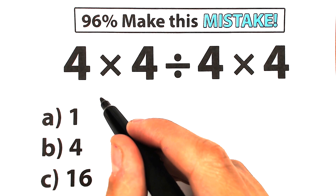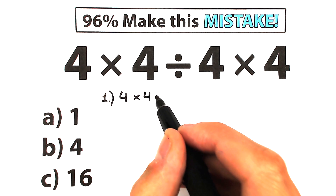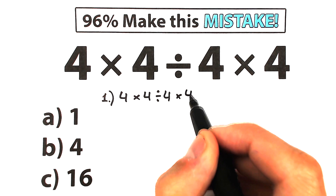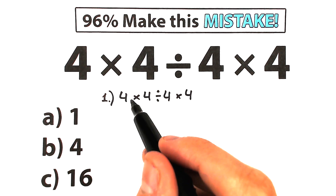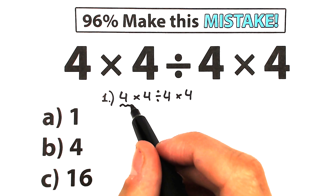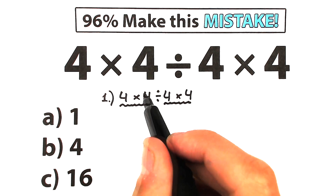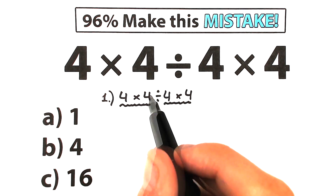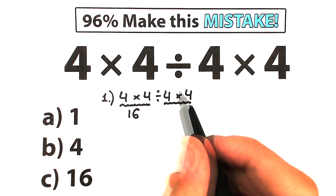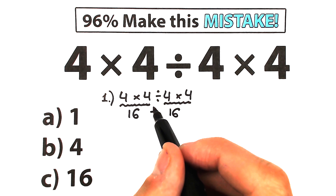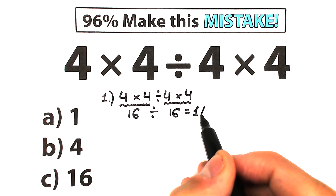I want to start with the first interpretation. We have 4 times 4 divided by 4, and times 4. If you look closely, we have multiplication on the left-hand side and absolutely the same multiplication on the right-hand side — on the left and right side of the division sign. 4 times 4 equals 16, and on the right side we have the same 16, so 16 divided by 16 gives us 1. This is option A.